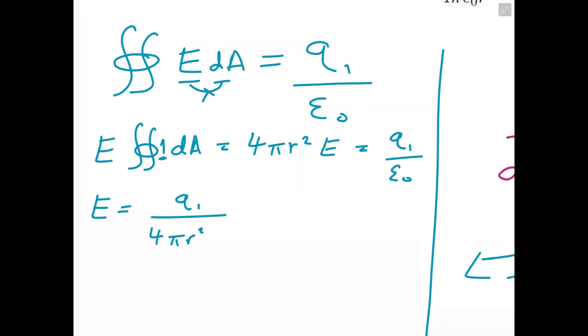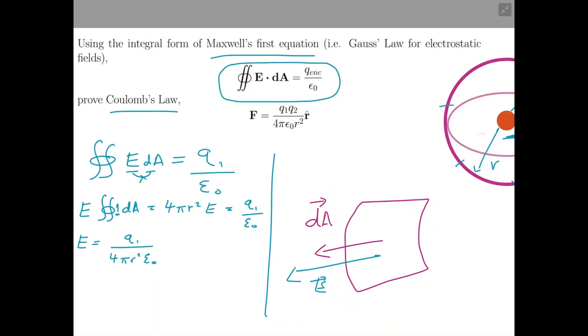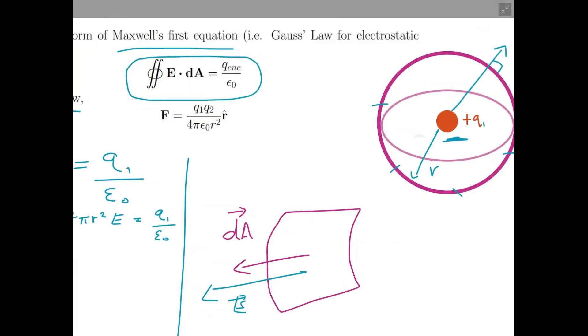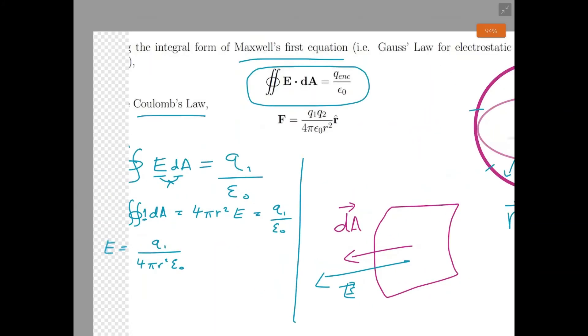Now we're almost there at Coulomb's Law. What we just need to remember is this r we've chosen represents the distance or displacement of our test charge from q₁. So we can actually call this r a vector—its direction is radial and its length is equal to the radius of the sphere. So its length is r.